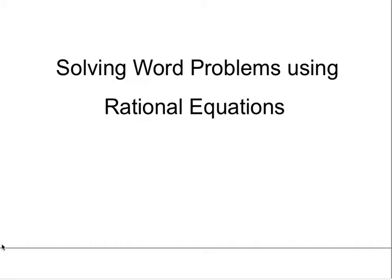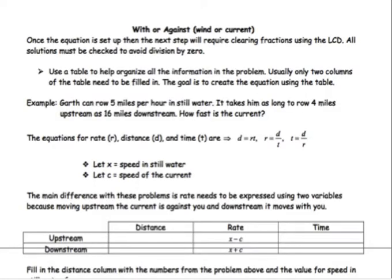Those are the types of questions we talked about recently in class. We're going to use something probably from back in middle school called the DIRT formula. If you look at that formula with capital letters, the distance formula is distance equals rate times time.